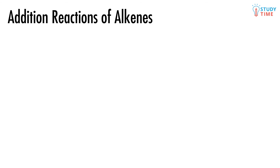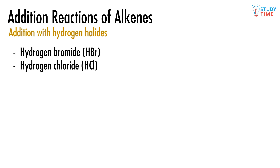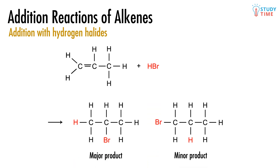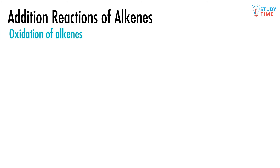There's one more addition reaction: addition of a hydrogen halide. A hydrogen halide is something like hydrogen bromide HBr or hydrogen chloride HCl — simple compounds with a hydrogen and a halogen bonded together. When added to alkenes, we again get major and minor products. Here's the reaction of propene and hydrogen bromide.